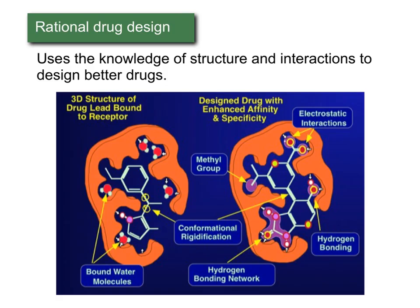The idea with rational drug design, or structure-based drug design, is that it takes our knowledge of structure and interactions to design better drugs. Here on the left, we have a structure bound in an enzyme, and we know it binds. If scientists know the structure of that and something about the structure of the protein, they can make changes to improve binding in the pocket. For example, this region of our protein has water molecules making hydrogen bonds to the protein. If we redesigned our drug to have groups capable of hydrogen bonding or electrostatic interactions, we could improve how well it binds into that pocket.